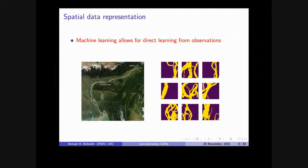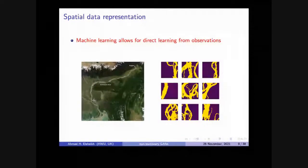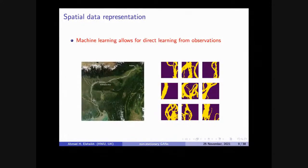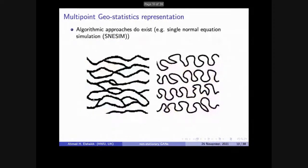The two routes — algorithmic and machine learning — can complement each other. Sometimes machine learning is more appropriate. Some people postulate that the future is all machine learning; you could agree or not, but it has a use in the mix. As part of what I will present today, we adopt a machine learning approach. This is not to say that existing algorithms do not perform satisfactorily for many problems, but machine learning has some advantages we will highlight. An algorithm famously used in geostatistics to generate patterns is the SNESIM algorithm.